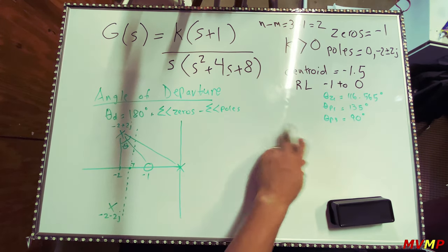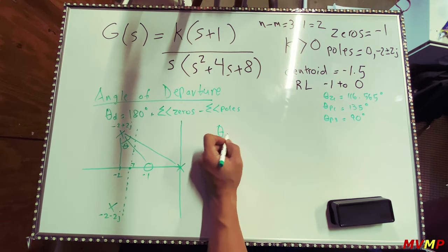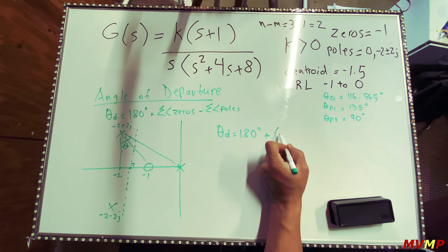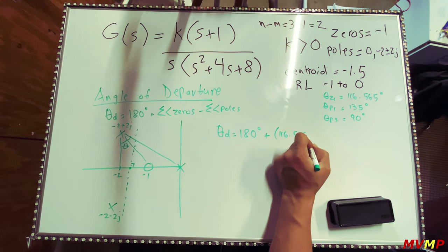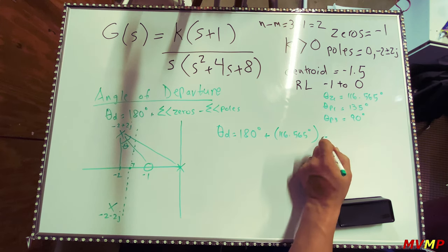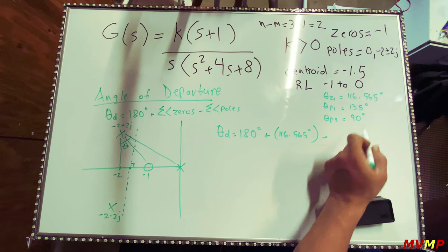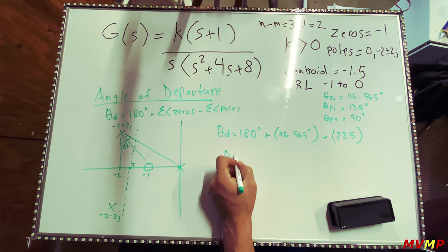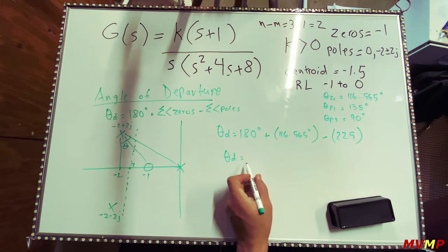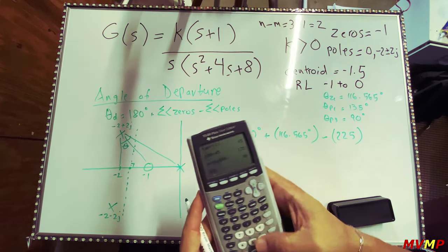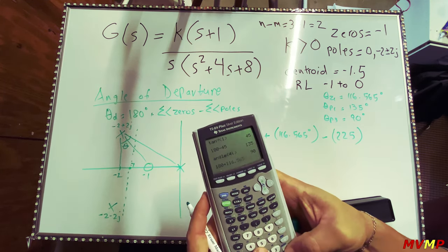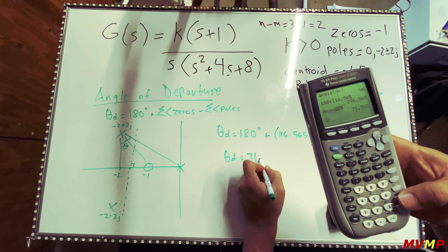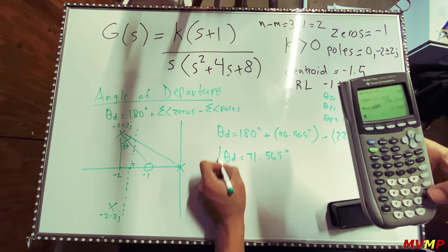Now we have everything needed to calculate the angle of departure. Angle of departure equals 180 degrees plus the sum of zero angles minus the sum of pole angles: 180 plus 116.565 minus (135 plus 90), which is 180 plus 116.565 minus 225. This gives an angle of departure of 71.565 degrees.